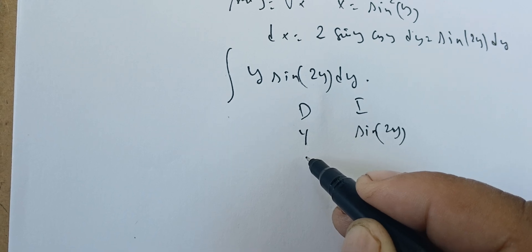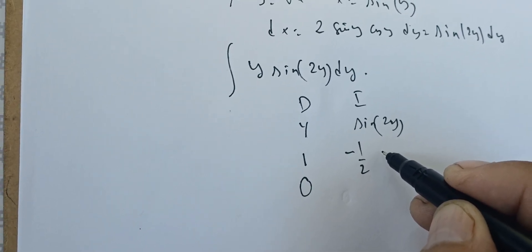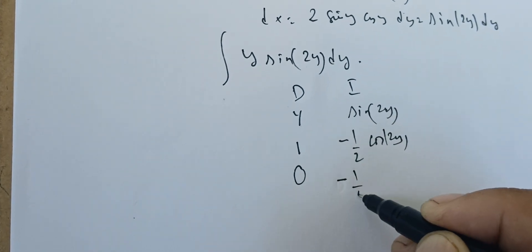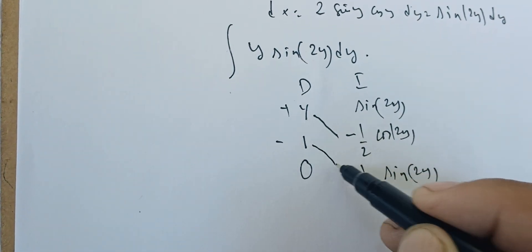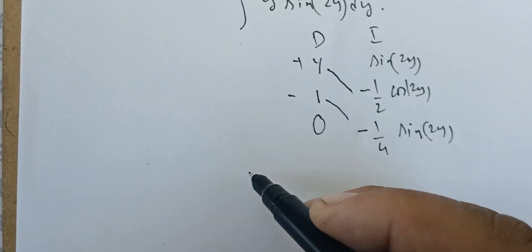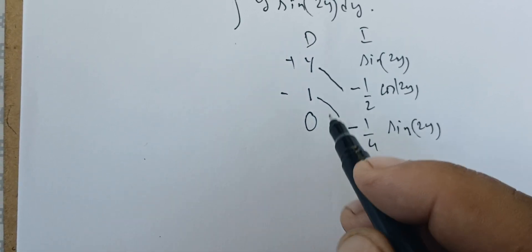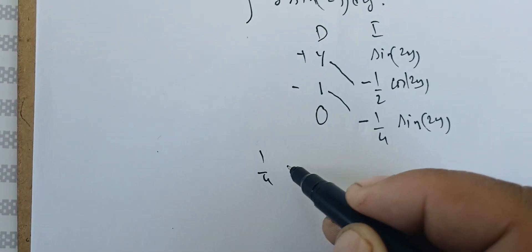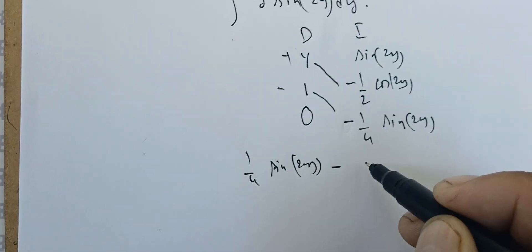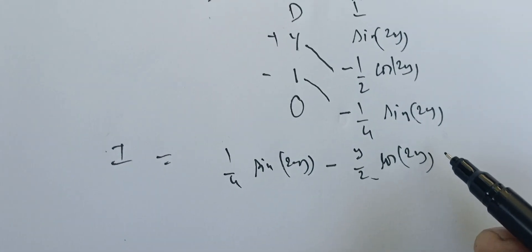Using the tabular method: we differentiate y to get 1, then 0; we integrate sin(2y) to get -cos(2y)/2, then sin(2y)/4. Applying the alternating signs and diagonal multiplications gives us: (1/4)sin(2y) - (y/2)cos(2y) + C. Let's call this integral I.